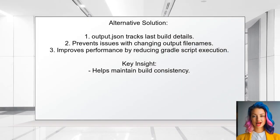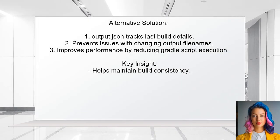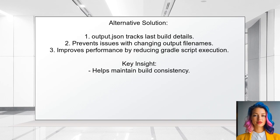One user explains that the output.json file helps Android Studio keep track of the last build's details, even if you've customized your Gradle script. They experienced issues with output file names changing after commits, which led to installation failures. This file allows Android Studio to load necessary information without running the entire Gradle script again, improving performance.